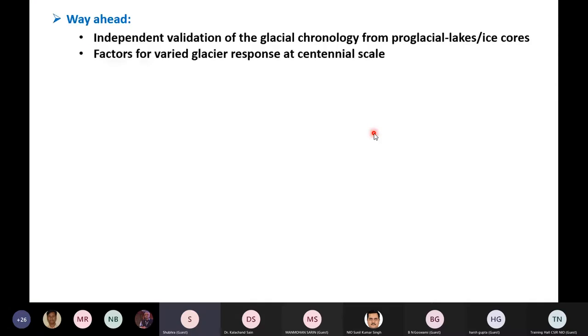Once, if we have these records, it would also perhaps help us to understand the variable response of the glacier at centennial scale. There are several hypotheses that are being produced, like it is the aspect of the valley or shape of the valley or the size of the glacier that varies this response, but we are not certain right now.